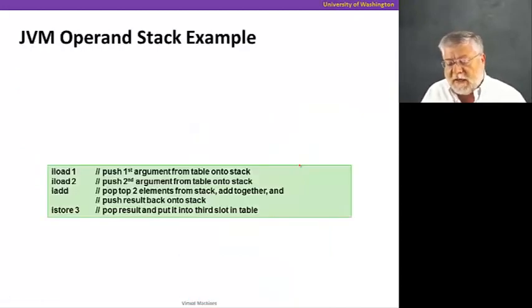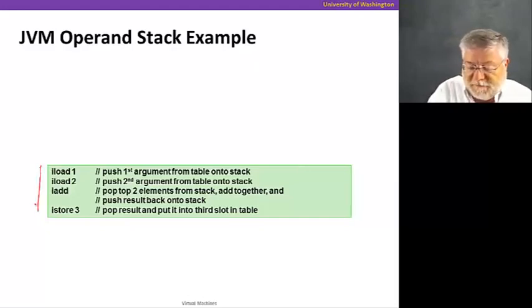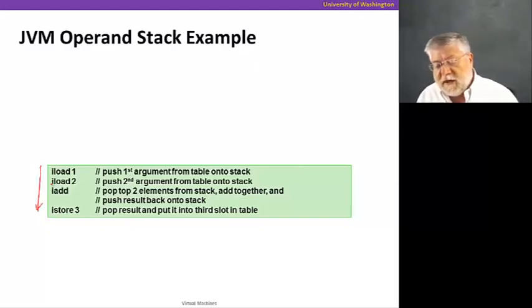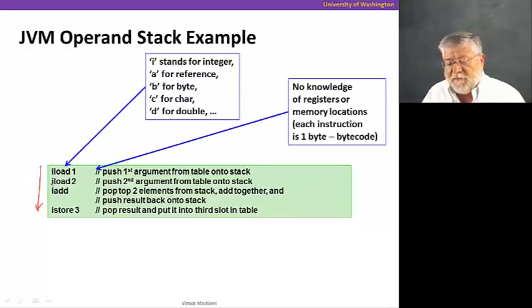Let's take a look at a quick example. Here's a Java bytecode for a very simple operation, namely taking two arguments, adding them together, and storing the result. So we have four bytecodes listed here. Looks kind of like assembly language, but it's a little bit different. You'll notice that there's no names for registers.